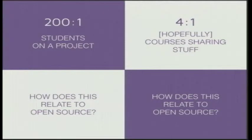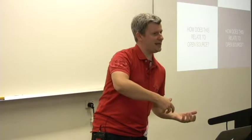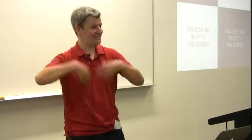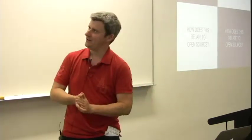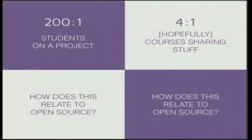There are sort of two sides of what I want to talk about. The first is the 200 to 1 — 200 students on a project — and the way that students collaborate with each other. This is an unusual course that has its roots in open source. The other side is how we can get teachers and universities to collaborate on education rather than code — the 4 to 1, hopefully, courses sharing stuff.